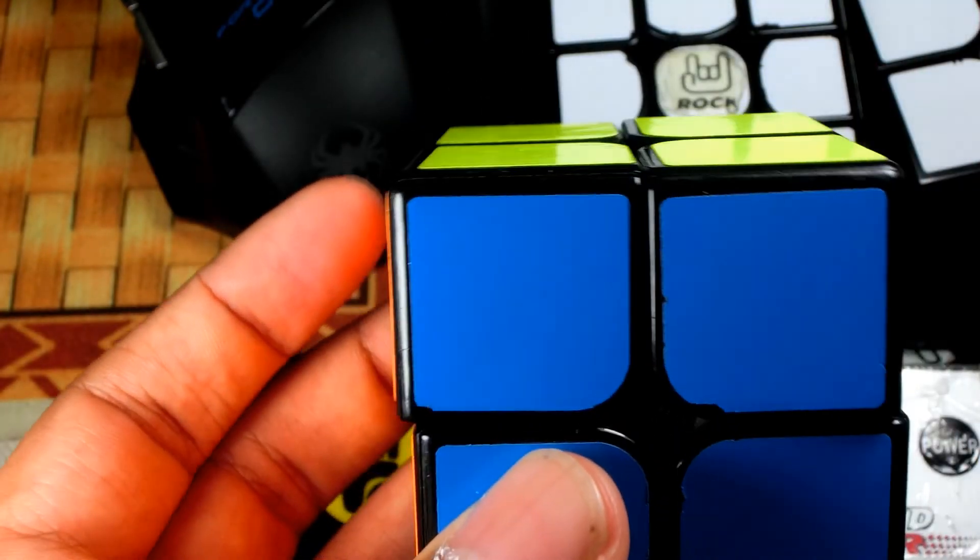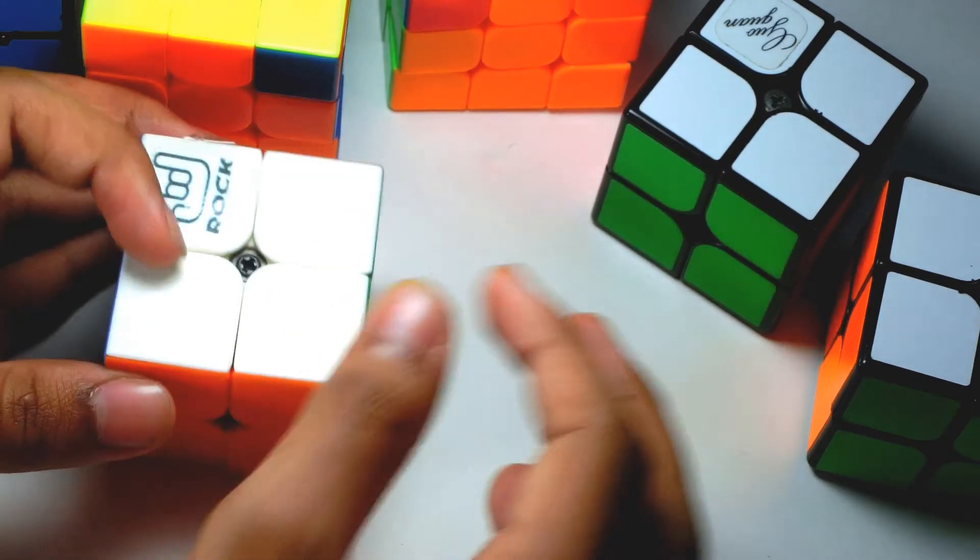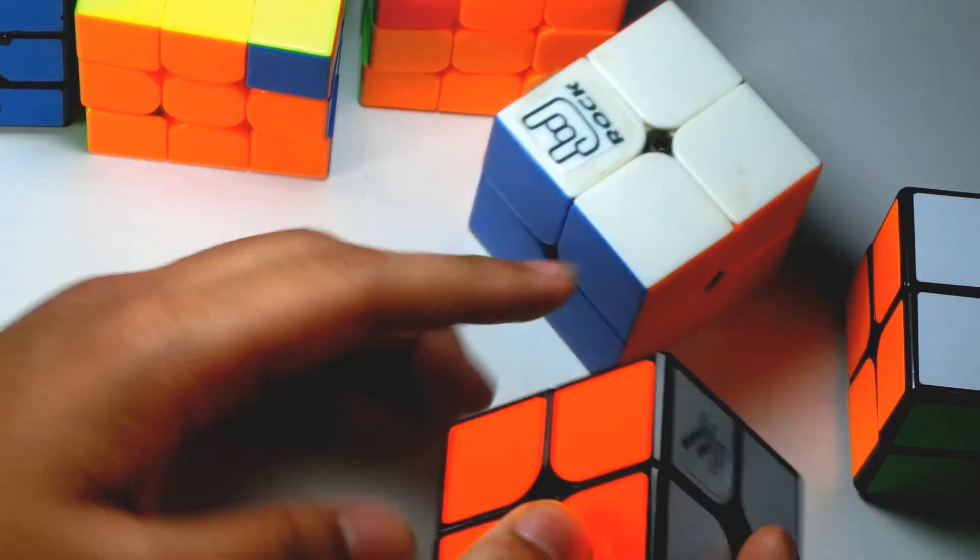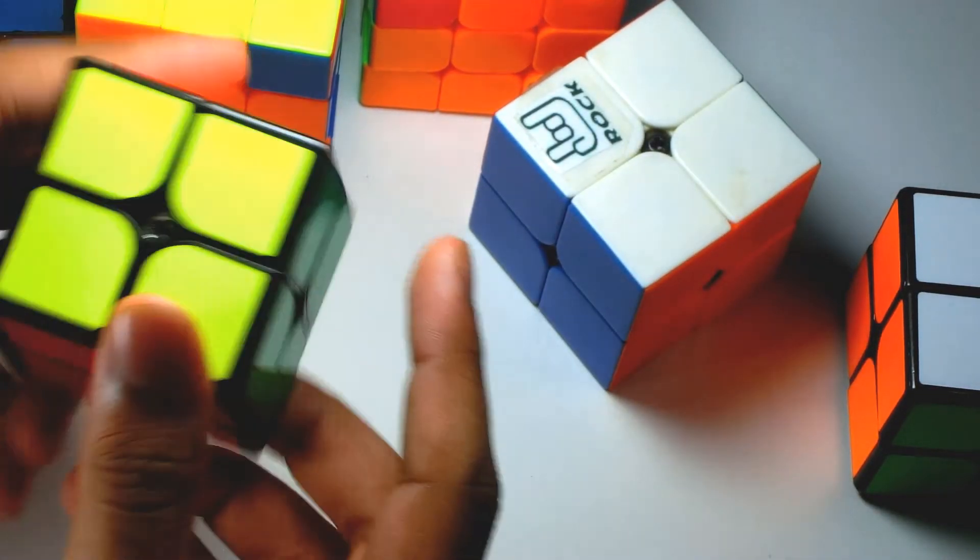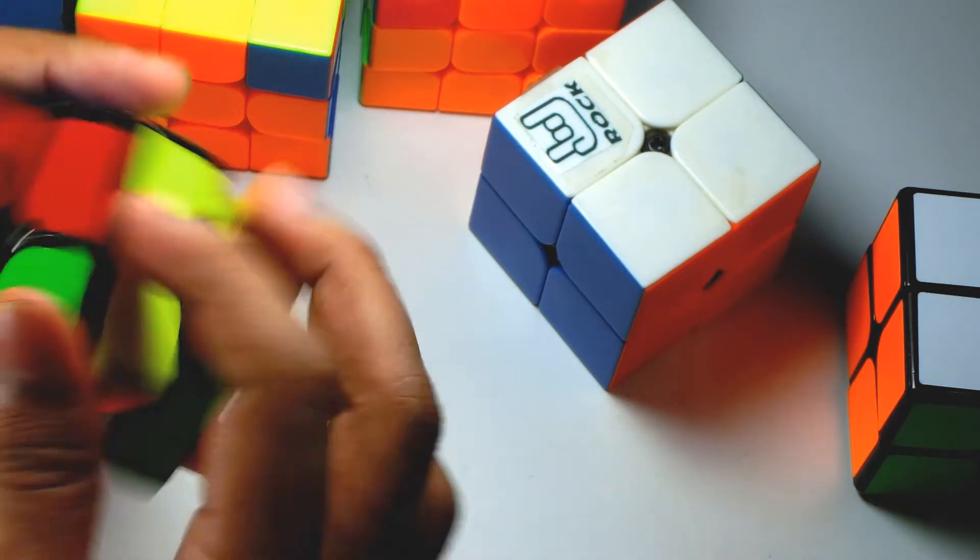So I'm going to break it down for you guys in slow motion so that you guys can see what it is. Now we're going to learn the optional algorithm. So if you want, you can even do the same case but with a different algorithm, the T permutation.